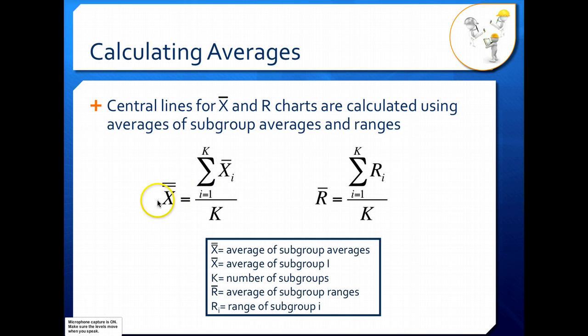So X-double-bar is the average of your averages. R-bar here is the average of your ranges. Again, we have summation notation where we're just summing the ranges we have from i equals 1 to K, the total number of our subgroups. Again, if we had five subgroups, we'd have five terms in our sum.